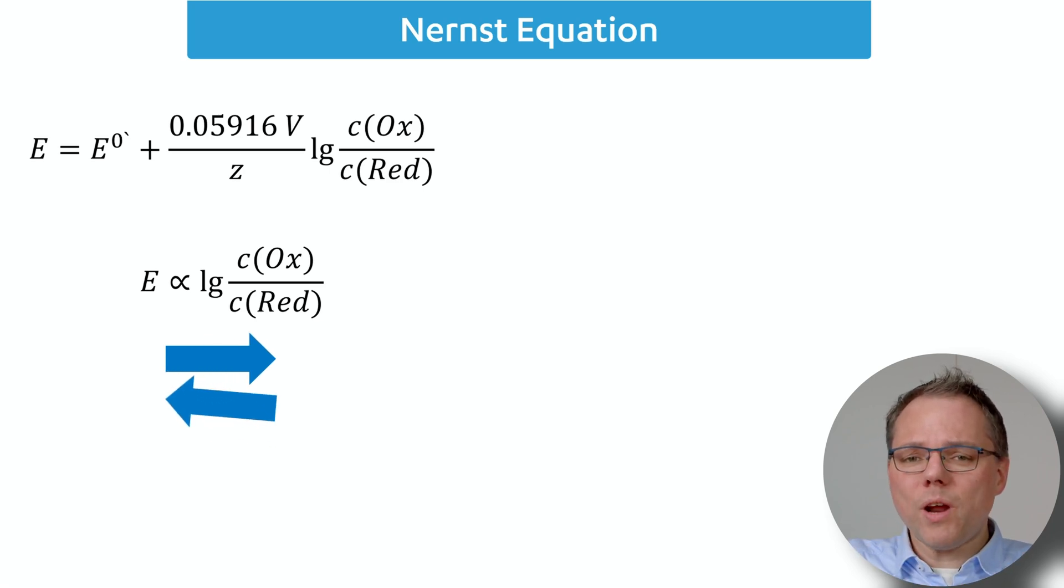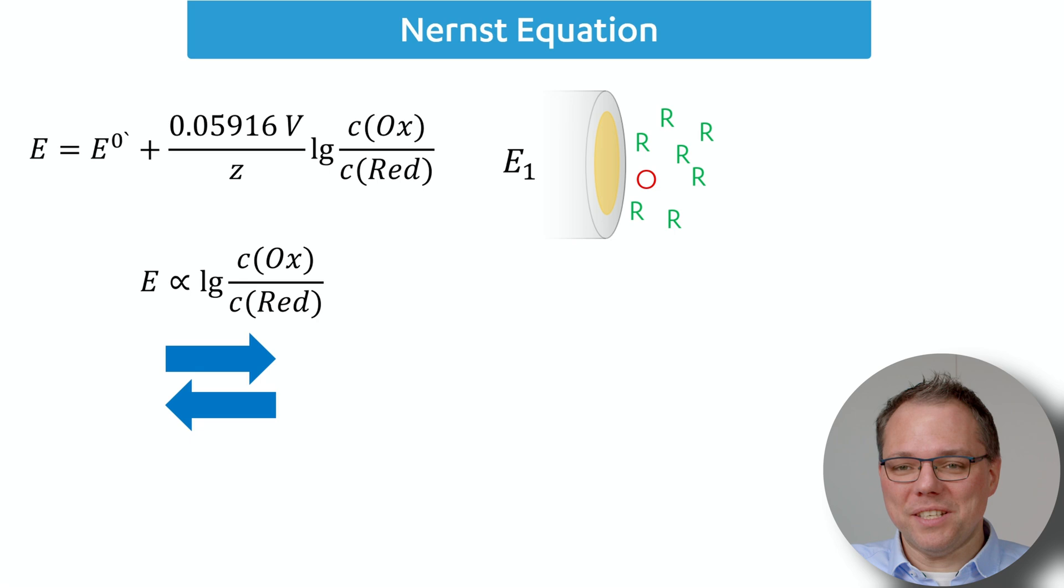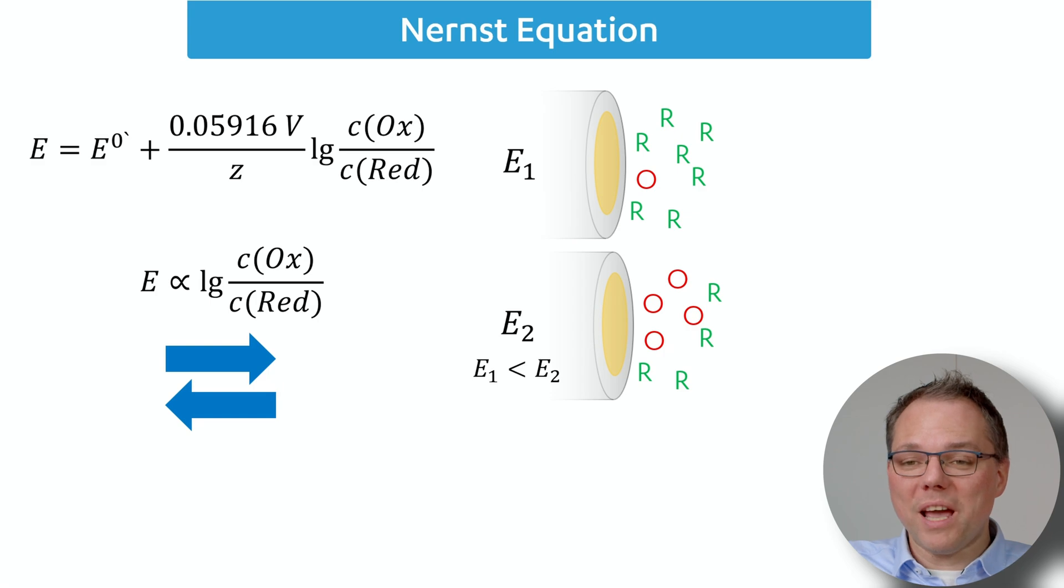The potential can also determine the chemical environment. So let's say we have an electrode and in front of it we have a certain ratio of the O and the R, the oxidized and reduced species, and now we increase the potential. Then we see that we have more O than before, and if we increase even further we even have more O.